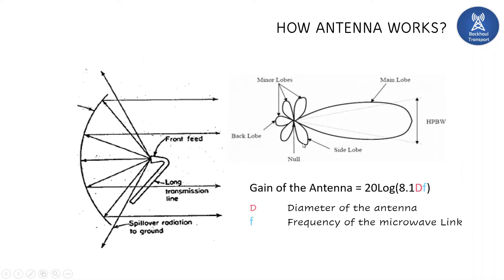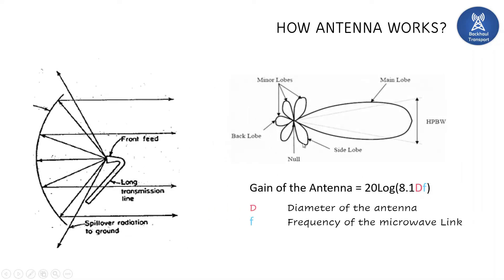Let's see the radiation pattern of the microwave antenna. There is a main beam — the half-power beam width — where maximum energy is focused. On both sides there are minor lobes, back lobes, and side lobes. The main lobe travels in the horizontal direction, while the minor lobes, side lobes, and back lobes travel in a vertical direction.